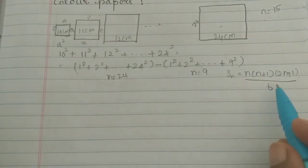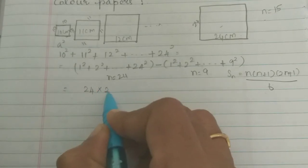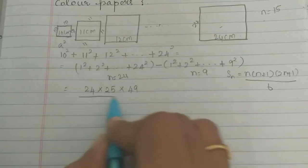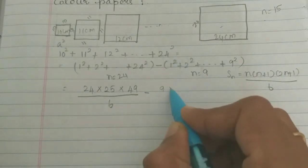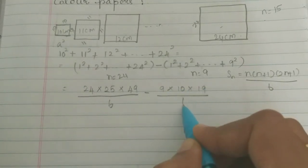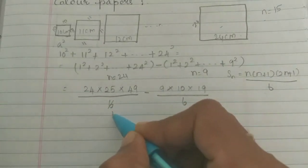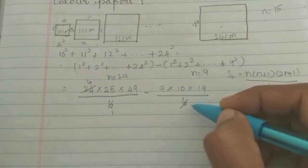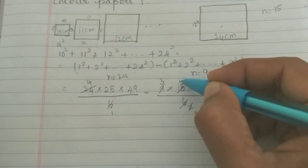So in the formula we substitute: 24 into 25 into 49 divided by 6, minus 9 into 10 into 19 divided by 6. This simplifies to 4 into 25 into 49, and 3 into 5 into 19.